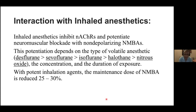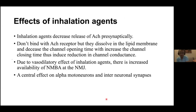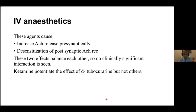With desflurane and sevoflurane, the maintenance dose of aminosteroid muscle relaxants is reduced by 25–30%. Inhalation agents decrease acetylcholine release presynaptically, dissolve in the lipid membrane decreasing channel opening time and increasing channel closing time, and cause vasodilatory increase in agent availability at the neuromuscular junction. IV anesthetics increase acetylcholine release presynaptically while causing desensitization of postsynaptic receptors — these two effects balance each other, so no clinically significant interaction is seen. Ketamine only potentiates tubocurarine, which is no longer used.